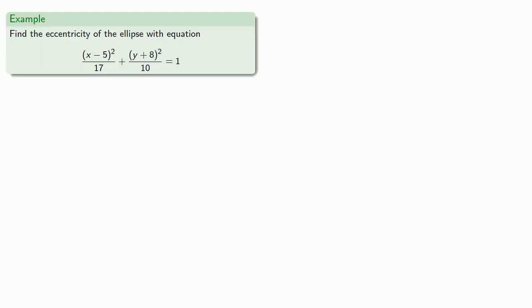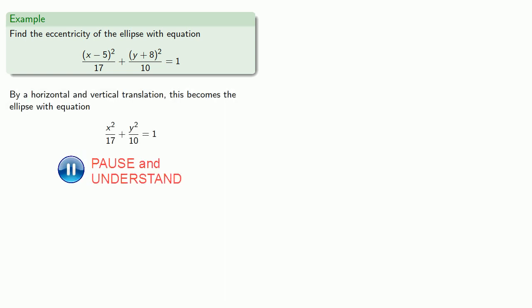And so we can find the eccentricity of the ellipse, and by a horizontal and vertical translation, this becomes the ellipse with the equation. And one of these is a², and the other one is b², and the only way we can divide them so our eccentricity is a real number is to divide 10 by 17.